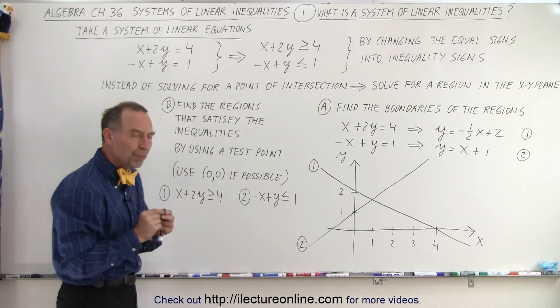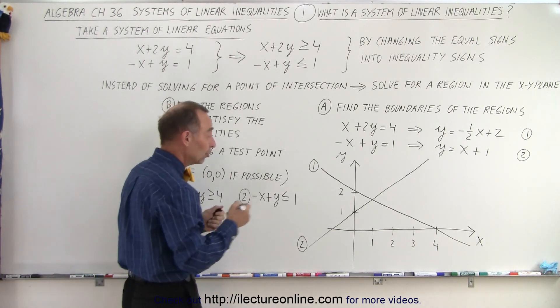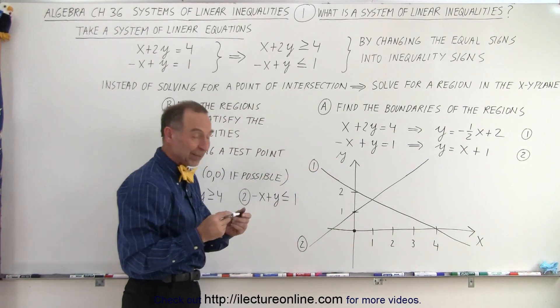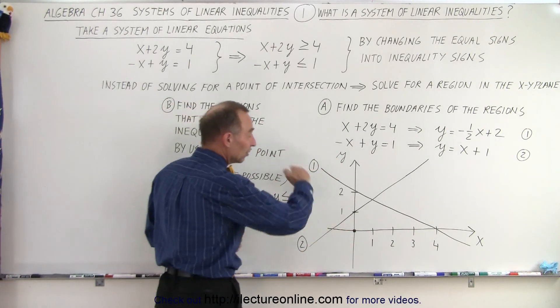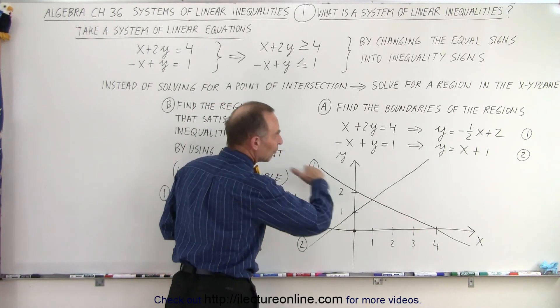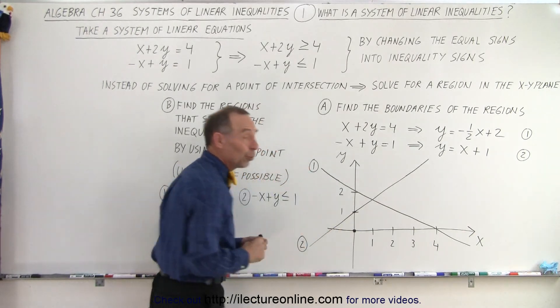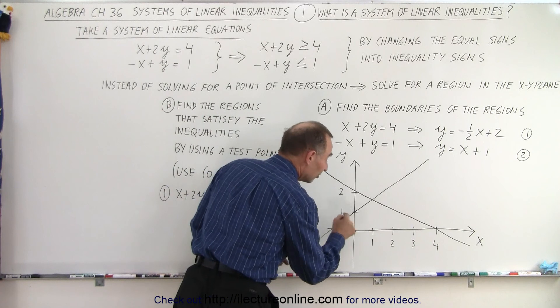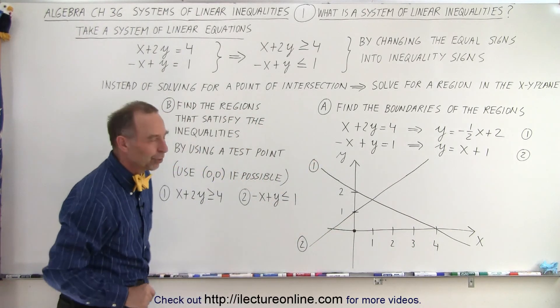And so we have to figure out which of these four regions does indeed solve that system of linear inequalities. So the way to do that is we pick a test point. And what I like to do is I like to pick the test point 0,0 if it's available. If none of the boundary lines goes right to the origin, 0,0 is always the best point to pick.